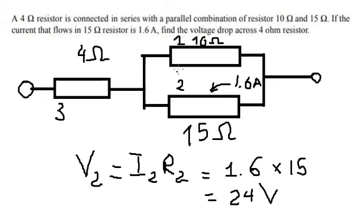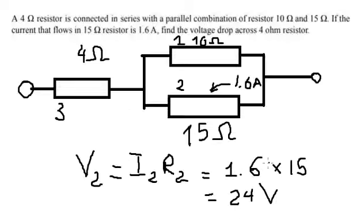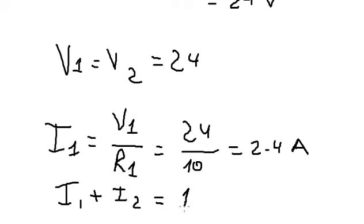We can find the sum of I1 plus I2. I1 is 1.6, I2 is 2.4, and we got about 4 amperes.